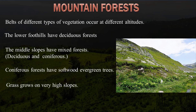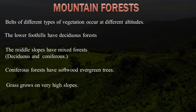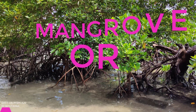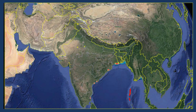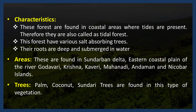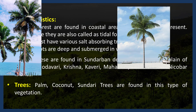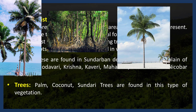Grass grows on very high slopes. Coniferous forests have soft wood evergreen trees. The last type is mangrove or tidal forest. These forests are generally found in the deltas of all major rivers and in the Andaman and Nicobar Islands. Mangroves grow along the coast in salty or marshy land, especially in tidal creeks, mud flats, and estuaries. These forests have various salt-absorbing trees, with roots deep and submerged in water. Palm, coconut, and Sundari are the main trees found in this vegetation.